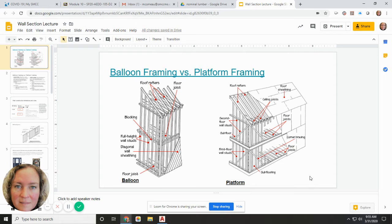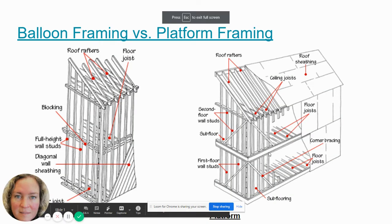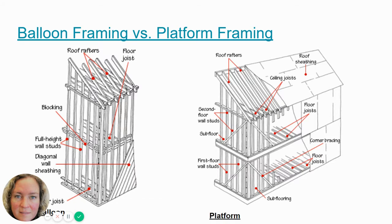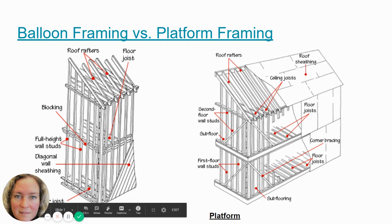Here are the basics. On this first page, we have two examples of different types of framing systems typically used for construction in this area. One is balloon framing, where the wall studs go all the way up to the highest level. This represents a gable end wall, where the gable end wall would be framed and put up. Balloon framing is considered as such when it goes beyond one story.